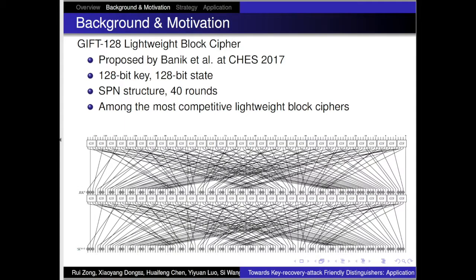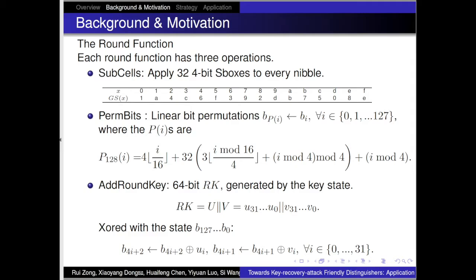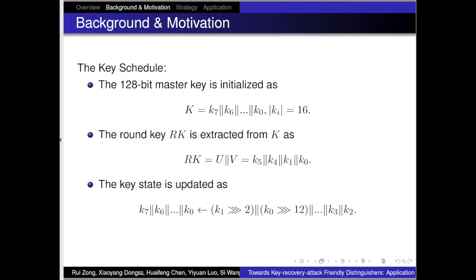GIFT-128 is proposed by Banik et al. at CHES 2017. Its key size is 128-bit with the same size state. It employs an SPN structure with 40 rounds, and GIFT is also among the most competitive lightweight block ciphers. The round function contains three operations: SubCells, which applies 32 4-bit S-boxes to every nibble; a very simple linear bit permutation; and AddRoundKey. The key schedule is also very simple, with master key size 128 bits, round key size 64 bits, updated by simple operations such as rotation.